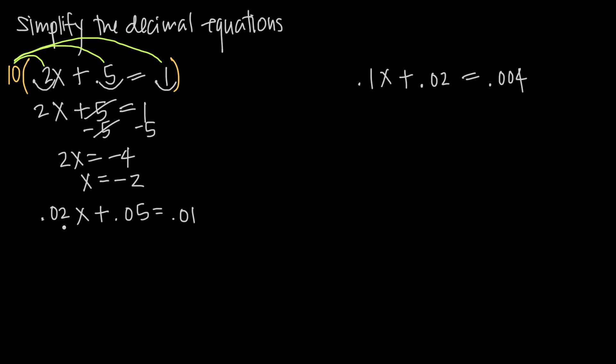Now here's the same problem. I just have smaller decimals than I did in the first problem. Instead of .2, I have .02, instead of .5, I have .05, and instead of .1, I have .01. All of these decimals end in the hundredths place, which means we're going to have to multiply this equation by 100 in order to turn all of the decimals into whole numbers.